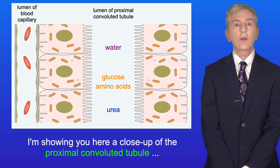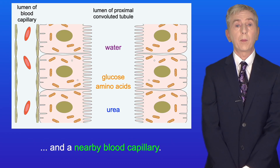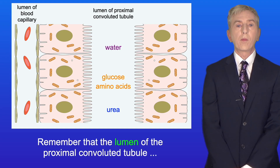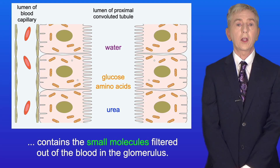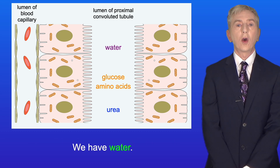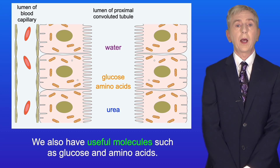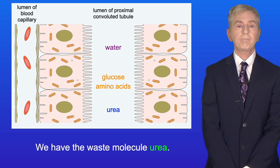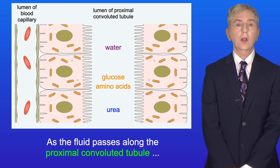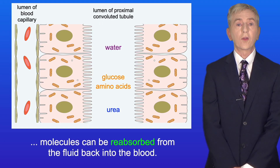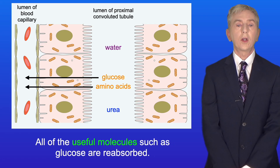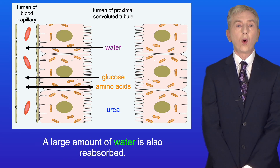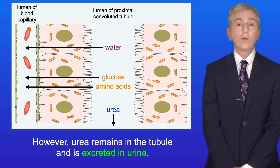Here is a close-up of the proximal convoluted tubule and the nearby blood capillary. Remember that the lumen of the proximal convoluted tubule contains the small molecules filtered out of the blood in the glomerulus. So we have water, we also have useful molecules such as glucose and amino acids, and we have the waste molecule urea. As the fluid passes along the proximal convoluted tubule, molecules can be reabsorbed from the fluid back into the blood. All of the useful molecules such as glucose are reabsorbed, and a large amount of water is also reabsorbed. However, urea remains in the tubule and is excreted in urine.